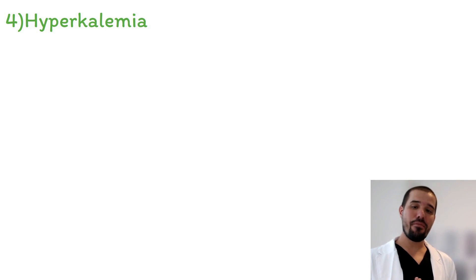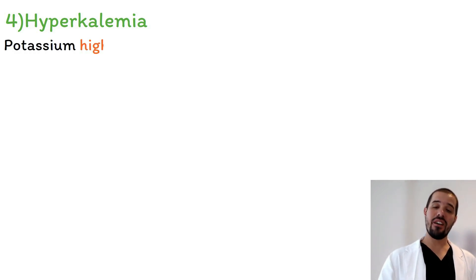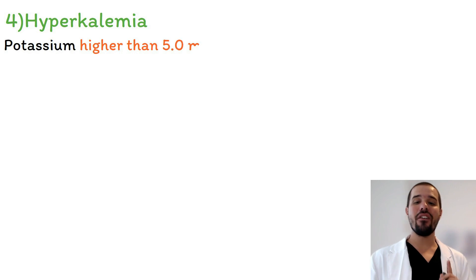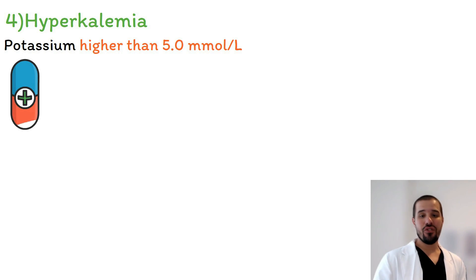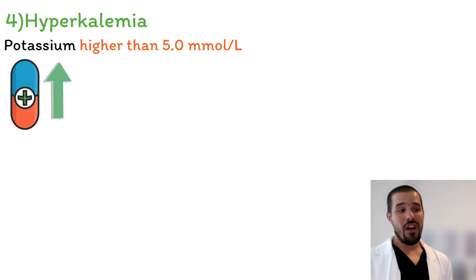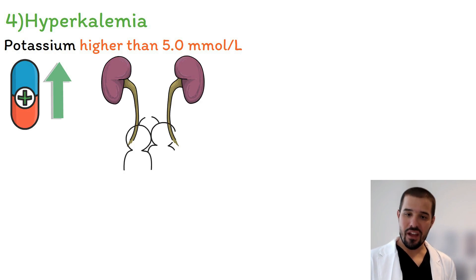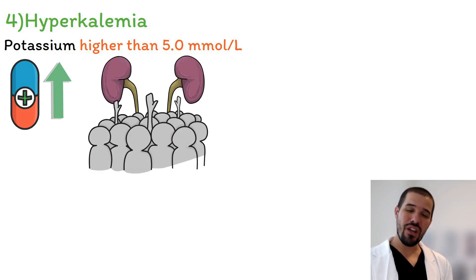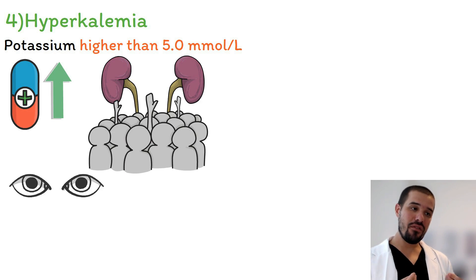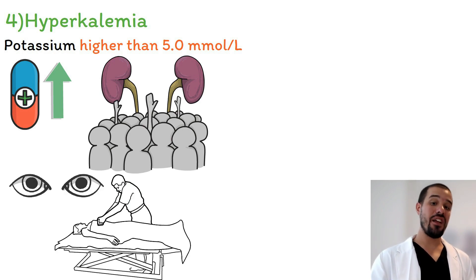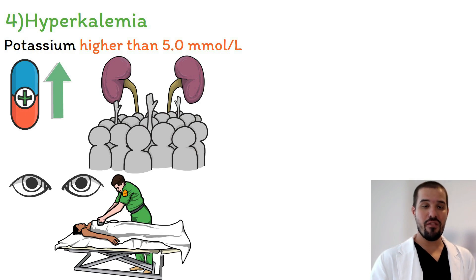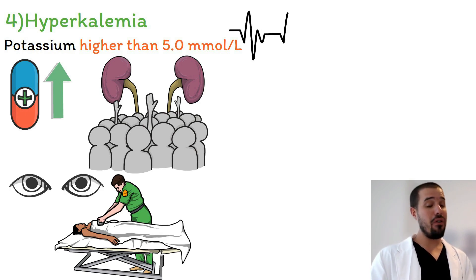Our fourth side effect is hyperkalemia — potassium higher than 5. ACE inhibitors have the potential to cause increases in potassium. Knowing that a large population taking this medication are renal patients, it is a more common side effect and requires more vigilance. As a nurse, you need to assess these patients and monitor their cardiac rhythms if admitted to the hospital.